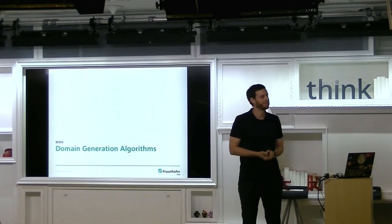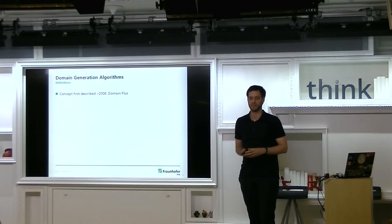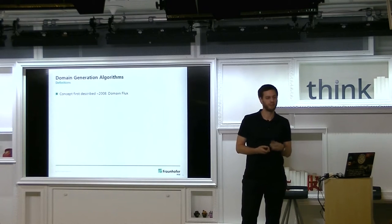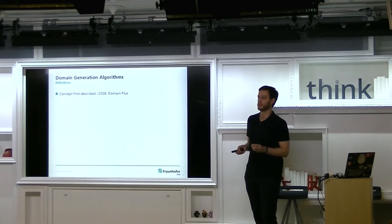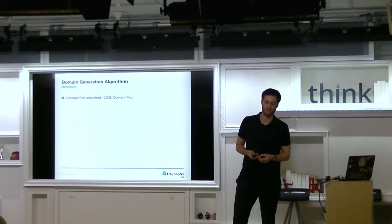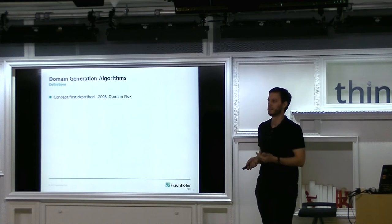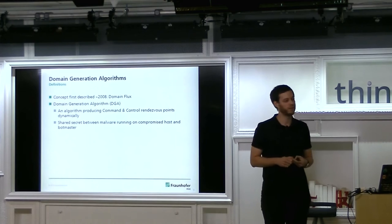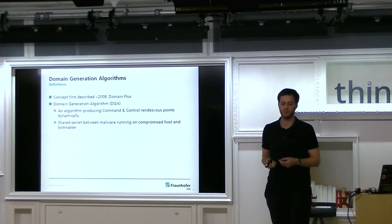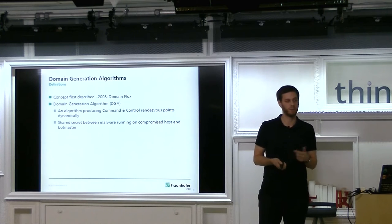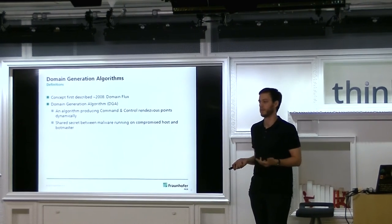Domain generation algorithms — it's a concept first described around 2008, though back then it was called DomainFlux. Some of you may know FastFlux service networks, where one domain resolves to many IP addresses to harden CNC infrastructure. DomainFlux is the inverse: many domain names pointing to potentially few IP addresses. To achieve this, you use a domain generation algorithm — an algorithm that produces CNC information dynamically. Think of it as a shared secret between the malware on the compromised host and the bot master, who must know how to generate those domains in order to register them.